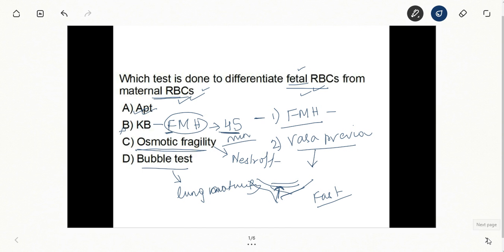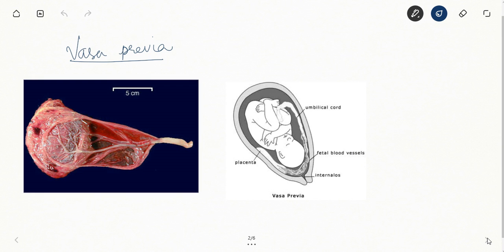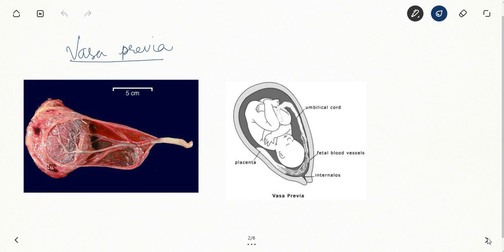Let's see in a little more detail about vasa previa and the tests done for it. Vasa previa, like here you can see the vessel is dividing in the membranes before it enters the placenta. And suppose this part of the membranes just overlies the os here.